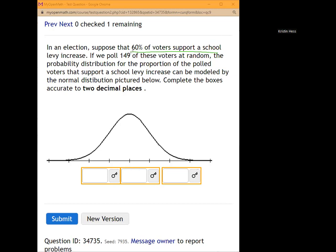We are also given that if 149 of these voters are polled at random, we want the probability distribution to two decimal places.